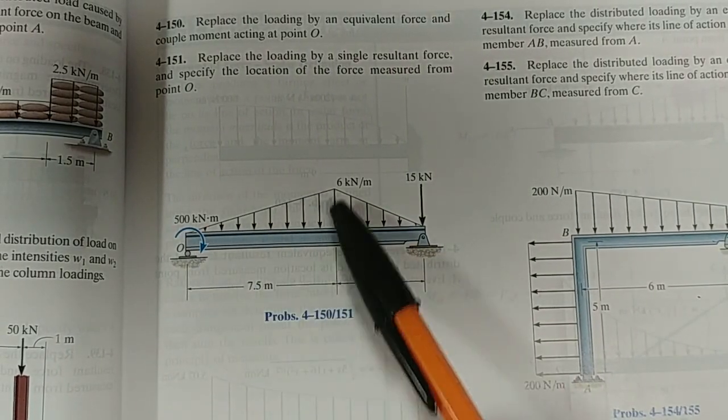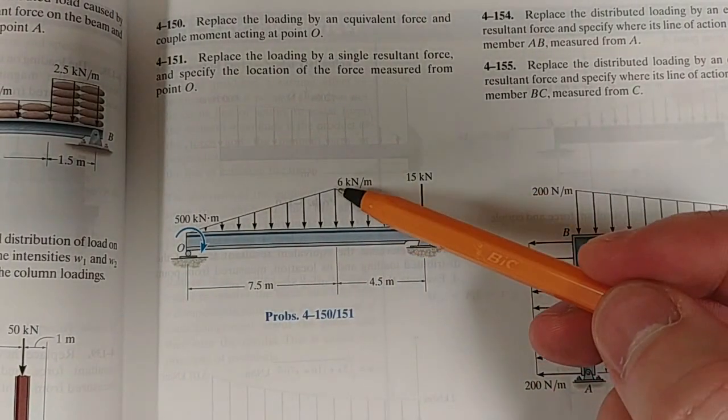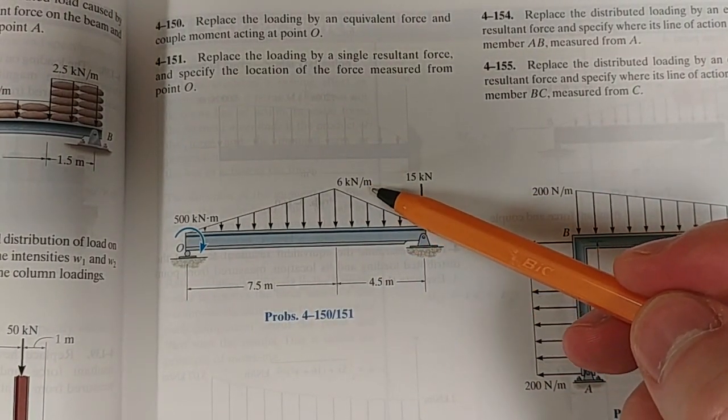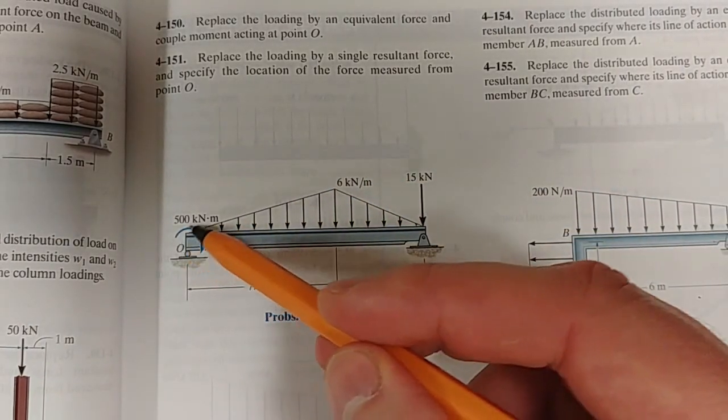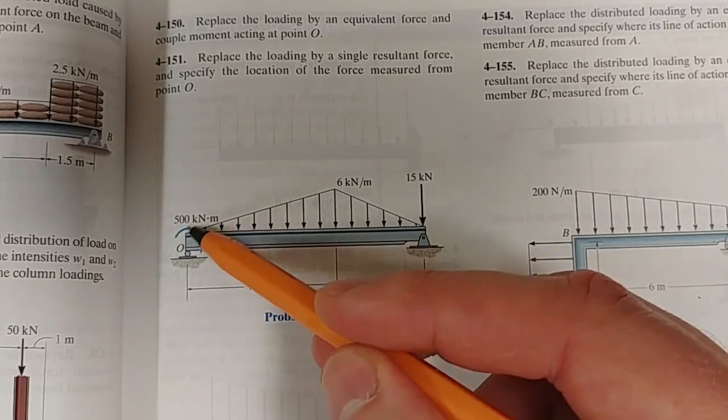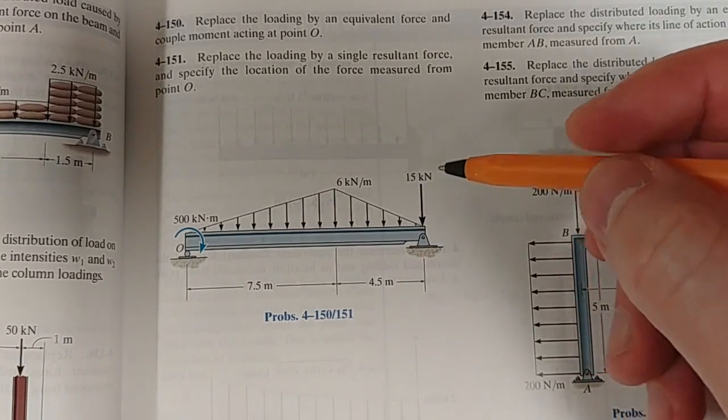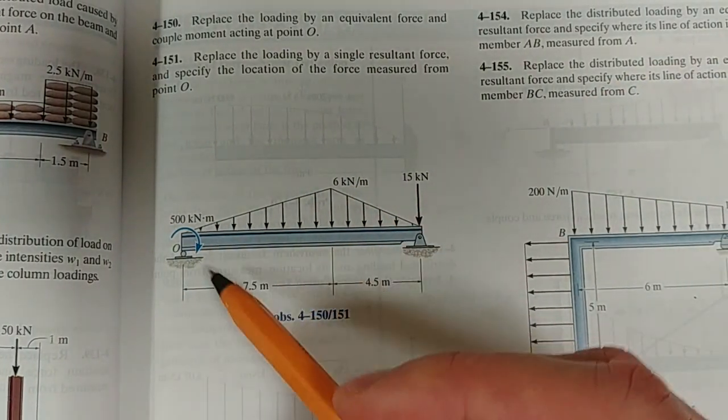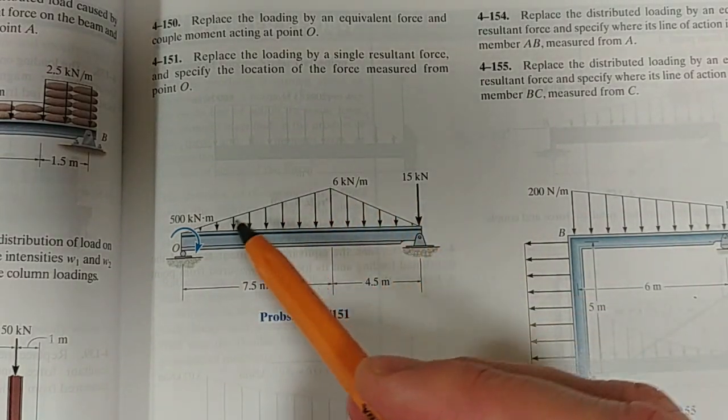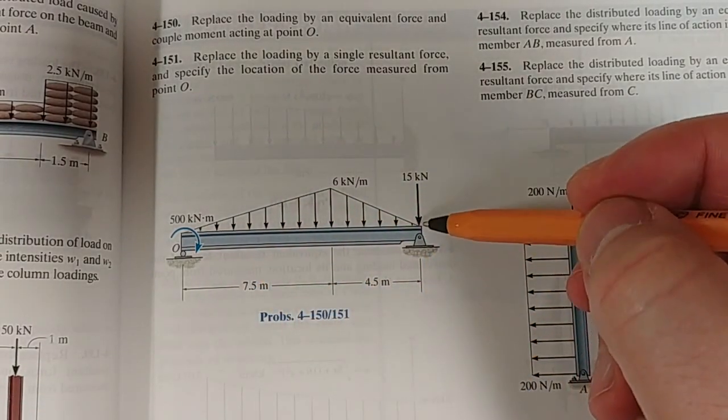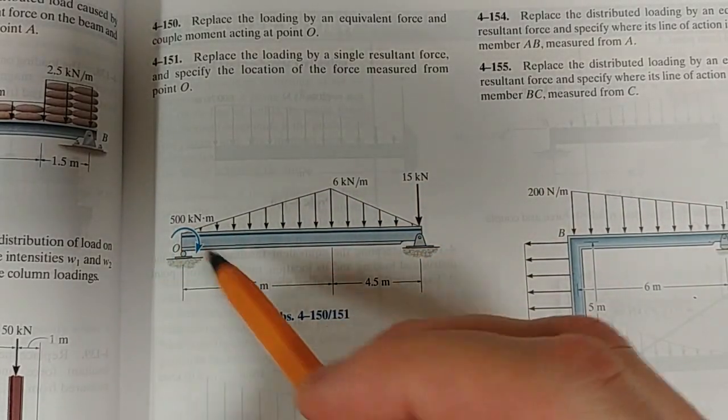As you can see, the distribution is made up of two triangles. The maximum value at this point is 6 kN per meter. We have a clockwise couple moment of 500 kN·m and a single point load of 15 kN. I like this problem because it's got a lot of ingredients: distributed load, single point load, and couple moment.